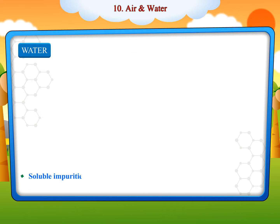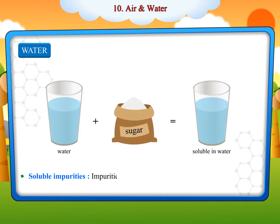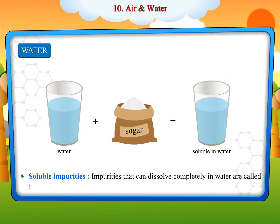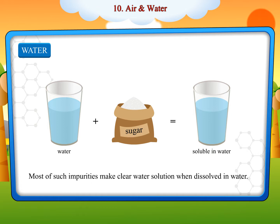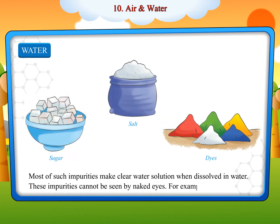Soluble impurities are impurities that can dissolve completely in water. Most of such impurities make a clear water solution when dissolved in water. These impurities cannot be seen by the naked eye. For example, sugar, salt etc.